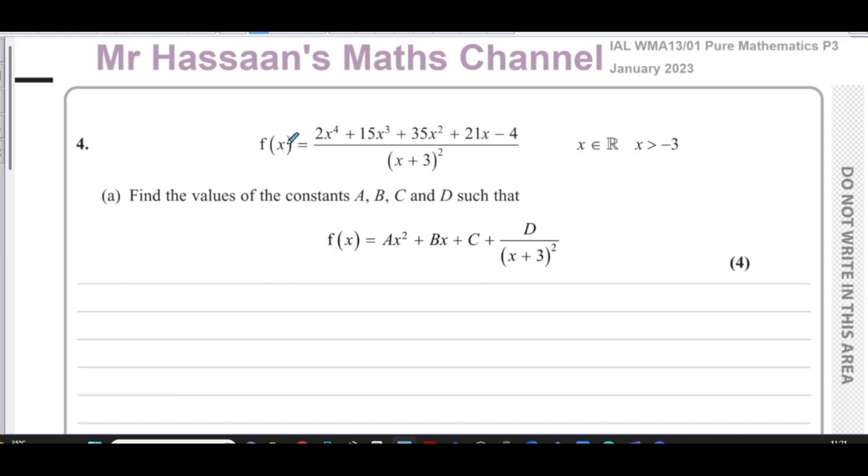This question here we have a function f(x) which is an algebraic fraction. They told us that f(x) equals 2x to the power 4 plus 15x cubed plus 35x squared plus 21x minus 4 over (x plus 3) all squared, where x is an element of the real numbers and x is greater than negative 3.